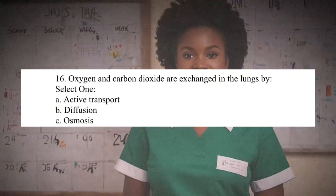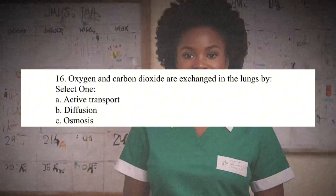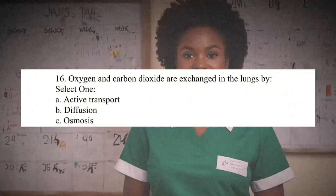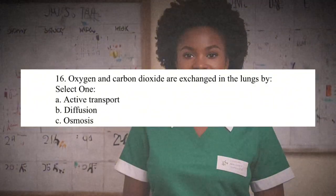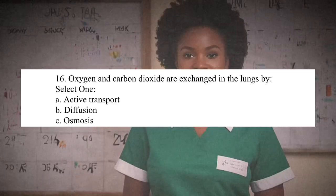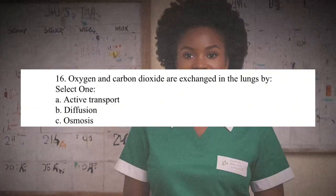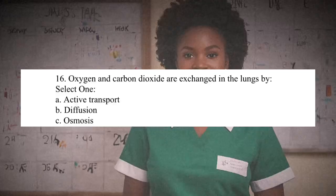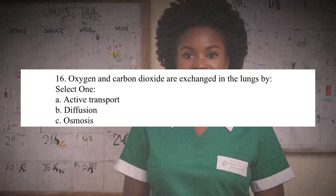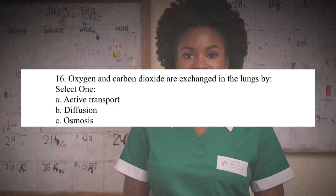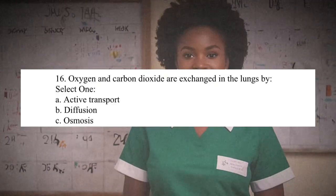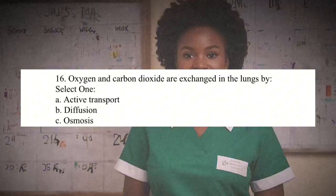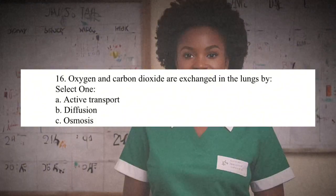Question 16: Oxygen and carbon dioxide are exchanged in the lungs by: A. Active transport. B. Diffusion. C. Osmosis. The correct answer is B. Diffusion. Gas exchange in the lungs occurs by diffusion, where oxygen moves from the alveoli into the blood and carbon dioxide moves from the blood into the alveoli following their respective concentration gradients.